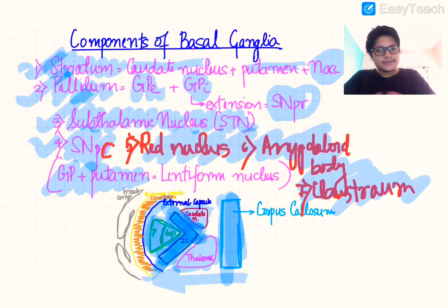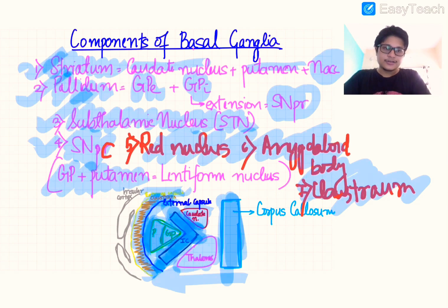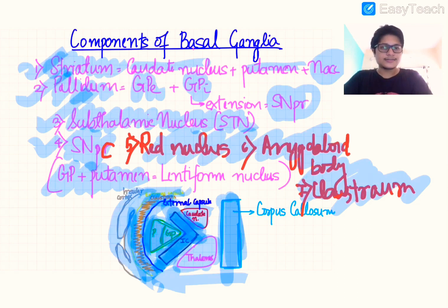Then we have this white band which we call the external capsule, then this orange band which we call the claustrum, lateral to that we have another capsule called the extreme capsule, and finally we have the insular cortex. This is an axial view.